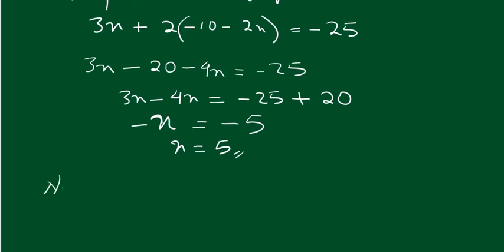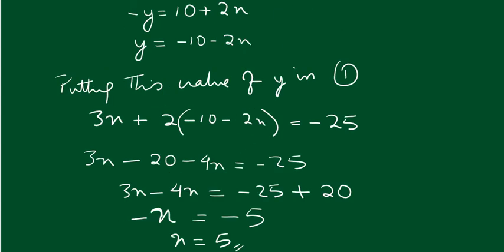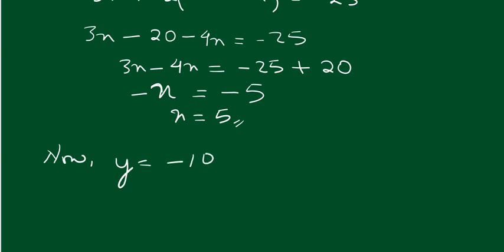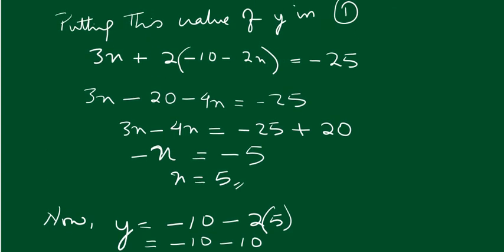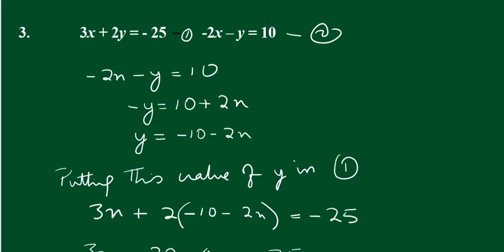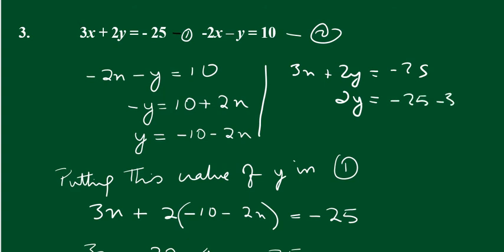Now we have to get the y value. We write 3x plus 2y equal to minus 25, then 2y equals minus 25 minus 3x, giving y equals minus 25 minus 3x divided by 2.